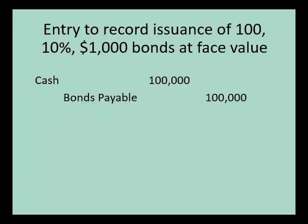Let's say a company needs to record the issuance of 100 bonds, and these bonds are for $1,000 each, paying 10% interest. The face value of the bond is $1,000. If we sell those 100 bonds for $1,000 each — selling them at face value — the company will receive $100,000 cash total from all the people that buy those bonds, and it will credit the bonds payable account.